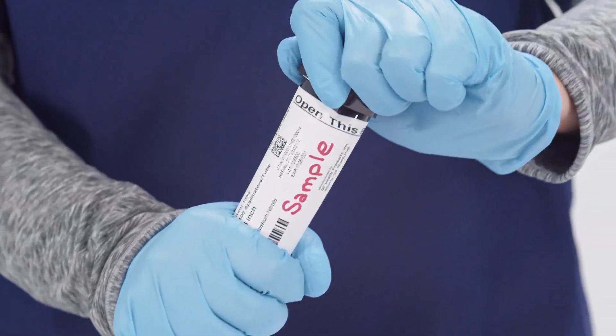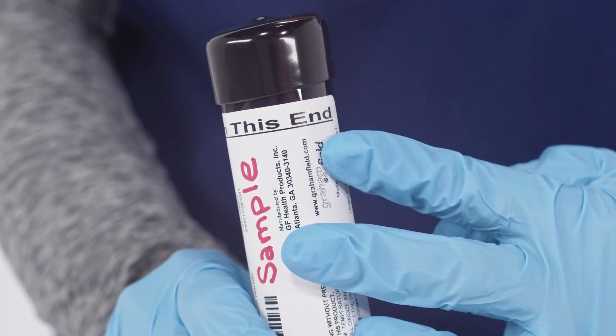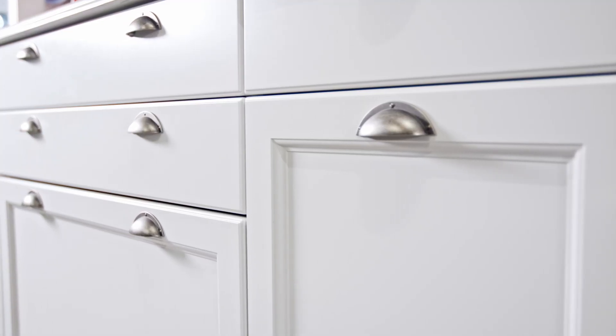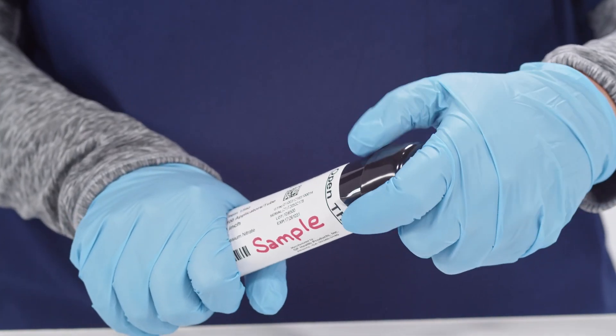To open the tube, gently twist the top off the side indicated by open this end. Once open, store silver nitrate in a dark dry place away from organic or other readily oxidizable materials. Keep container closed when not in use.